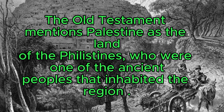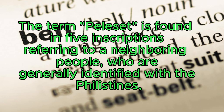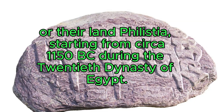The Old Testament mentions Palestine as the land of the Philistines, who were one of the ancient peoples that inhabited the region. The Book of Judges and the Books of Samuel contain the well-known story of a coastal state in biblical conflict with the Israelites. The term Peleset is found in five inscriptions referring to a neighboring people, who are generally identified with the Philistines or their land Philistia, starting from circa 1150 BC during the 20th Dynasty of Egypt.